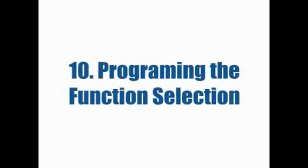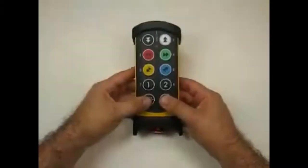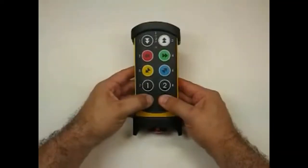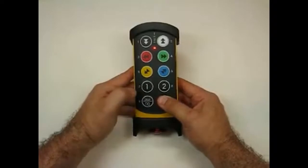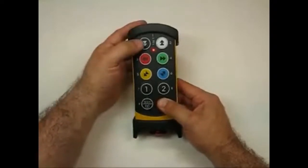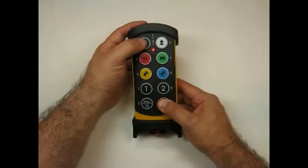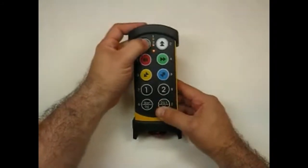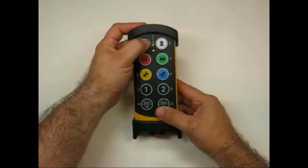Programming the function selection: start the transmitter by pressing both start buttons. Release the left start button — you have 0.3 seconds to perform the next action. Release the right start button and press 1 for function selection. Enter the safety code.